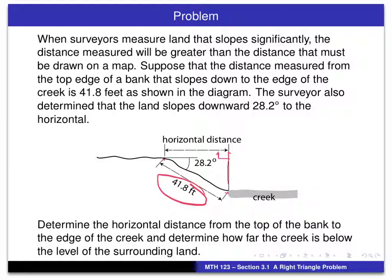With that, then we can determine the horizontal distance from the top of the bank to the edge of the creek, and then determine, in effect, the vertical distance, how far the creek is below the level of the surrounding land.